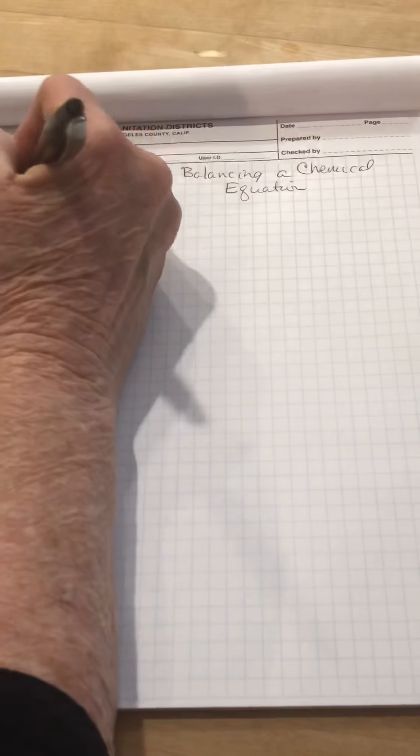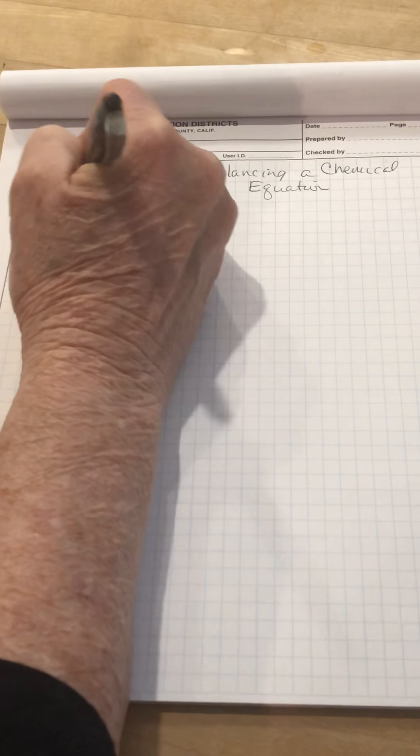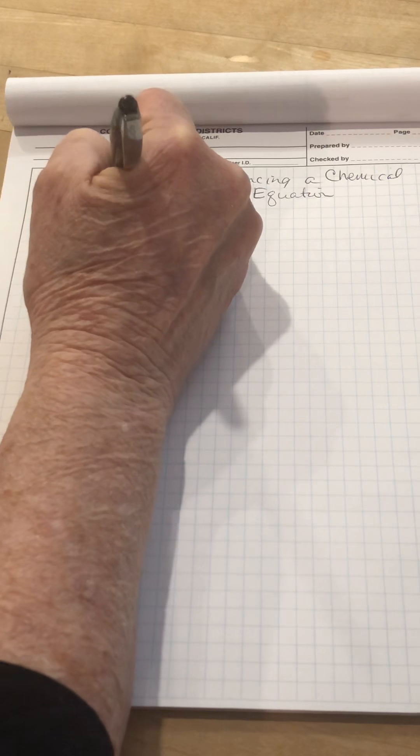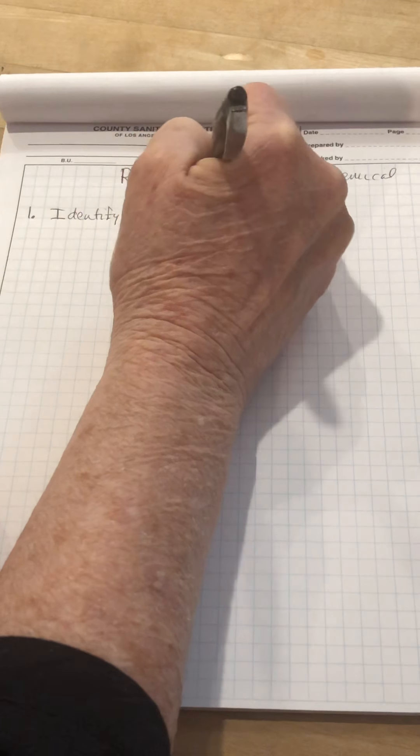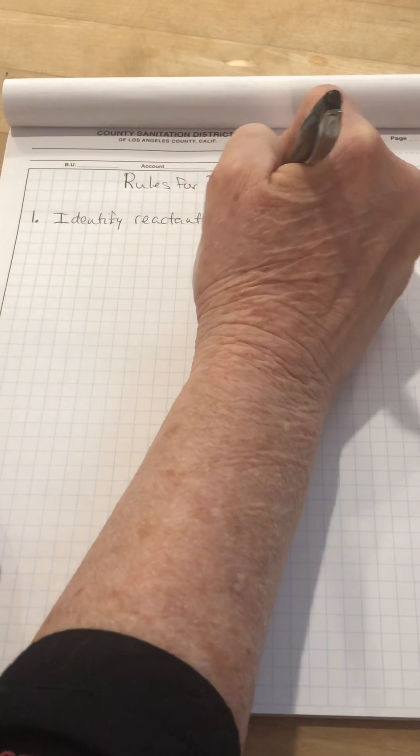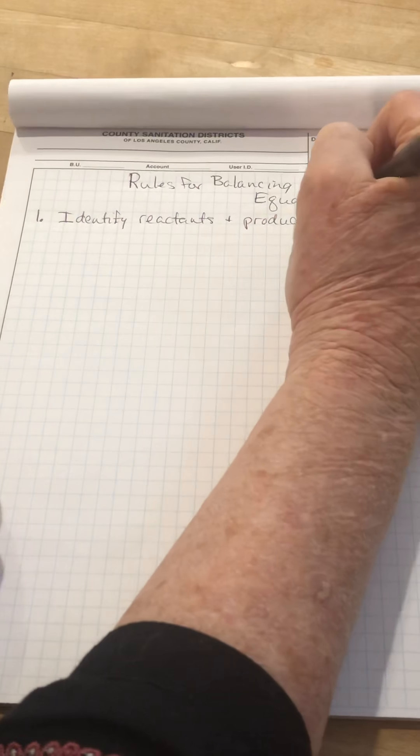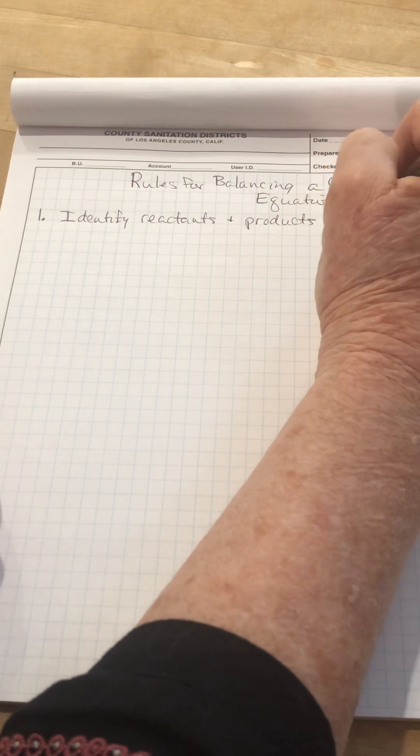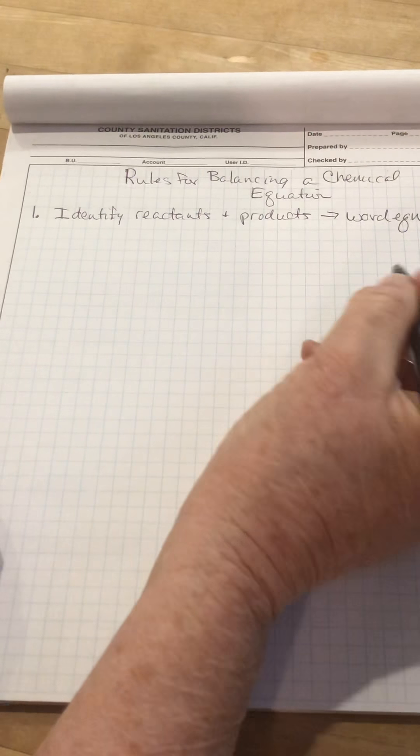So the first thing you need to do is to identify reactants and products. You're going to identify reactants and products and you're going to write a word equation. Remember EQN stands for equation.